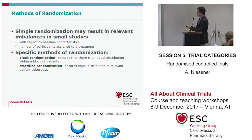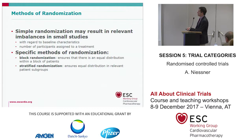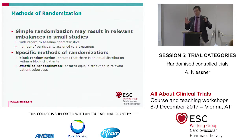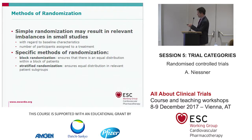The way to solve this is to use a specific method of randomization. Block randomization ensures there's an equal distribution within each block of patients. Stratified randomization ensures equal distribution in relevant patient subgroups — for example, in different centers, to make sure each center always has a balanced randomization.